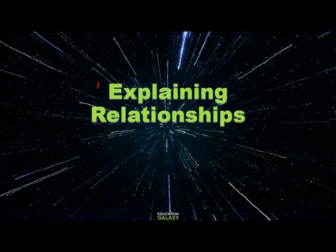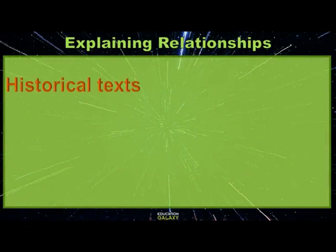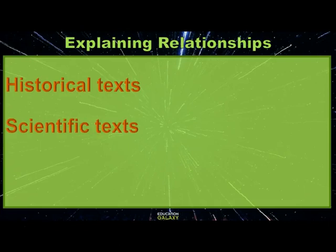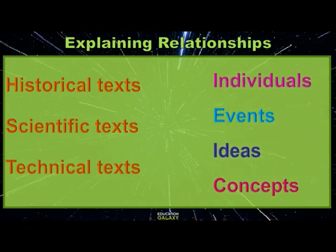Hello, today we will talk about explaining relationships. We are going to look at three kinds of informational texts and how the ideas are related in them. We'll look at examples of historical texts — about important historical events or people — scientific texts that explain phenomena or why something happens, and technical texts like menus, recipes, or any kind of forms.